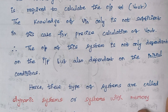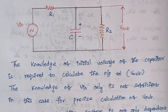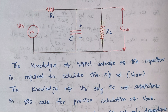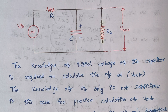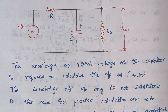Which systems are known as dynamic systems? Whenever the system has a capacitor or inductor in it, the system is said to be a dynamic system, because capacitors and inductors are known as energy storage elements. Whenever a circuit has capacitors or inductors or both, the system is denoted as a dynamic system.